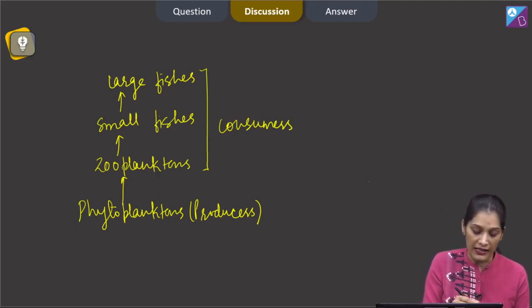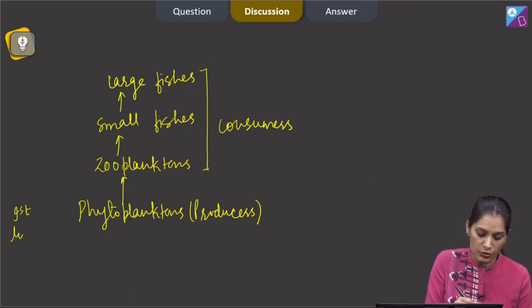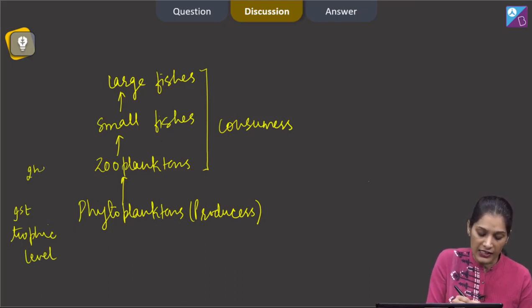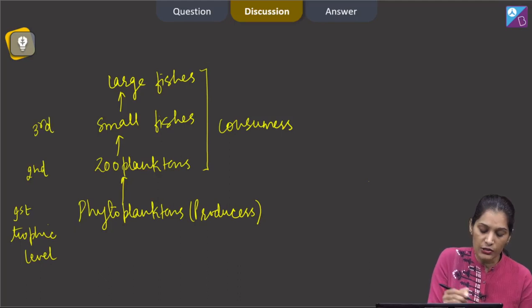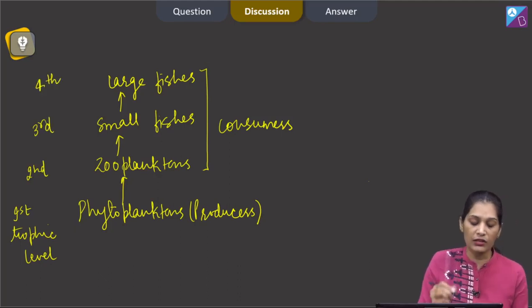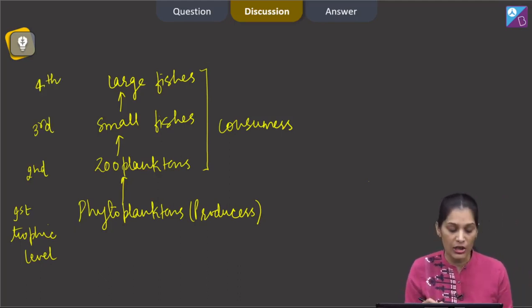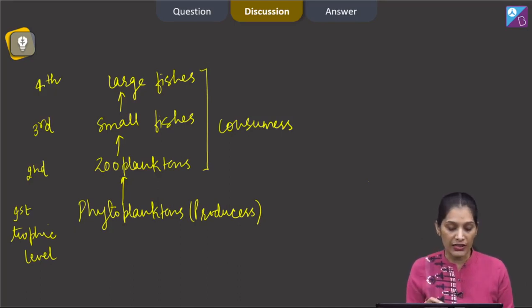Phytoplanktons are at the first trophic level, zooplanktons at the second trophic level, small fishes at the third trophic level, and the large fishes at the fourth trophic level. So at the last trophic level, the large fishes are present.